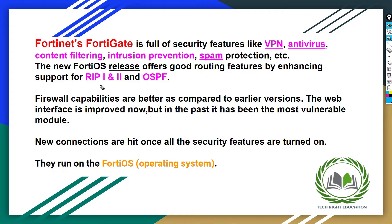What do we mean by RIP1, RIP2 and OSPF? RIP means Routing Information Protocol. RIP1 is RIP version 1 and RIP2 is RIP version 2. OSPF stands for Open Shortest Path First. These are both protocols which we will cover when we move forward in the CCNA tutorial.